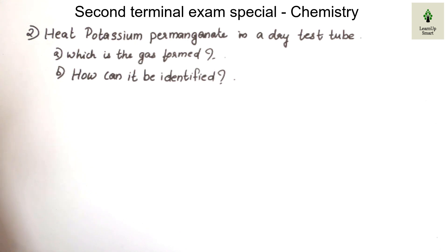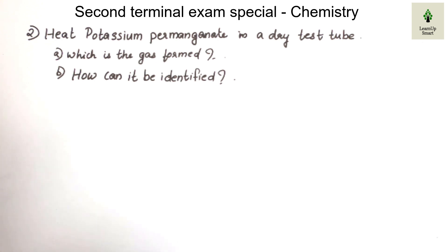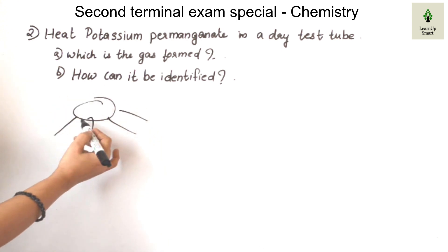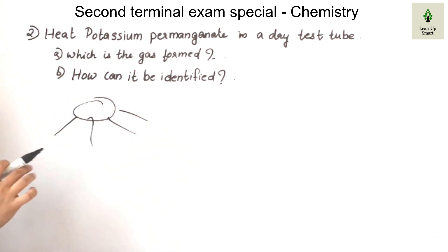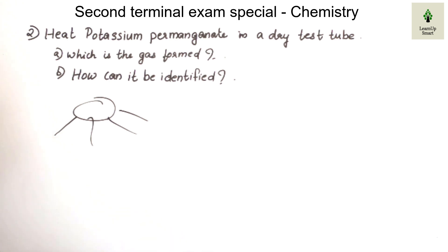The next question: heat potassium permanganate in a dry test tube. Which gas is formed and how can it be identified? We are learning this potassium permanganate experiment. They ask about decomposition. The reaction: potassium permanganate plus heat gives potassium manganate plus manganese dioxide plus oxygen. We learned this equation.